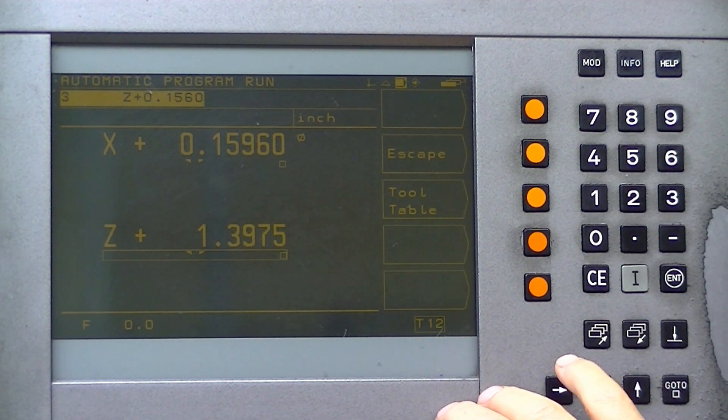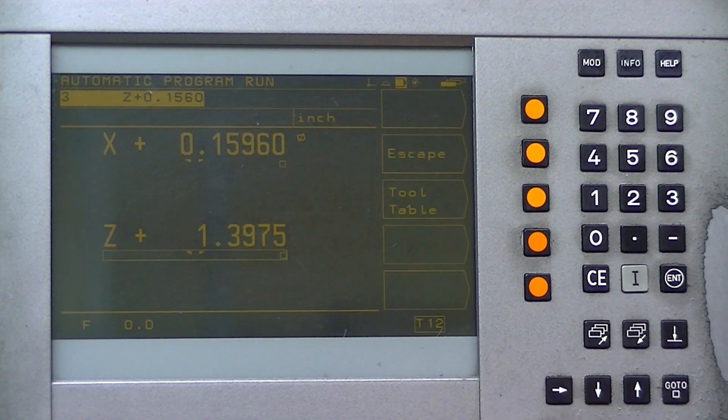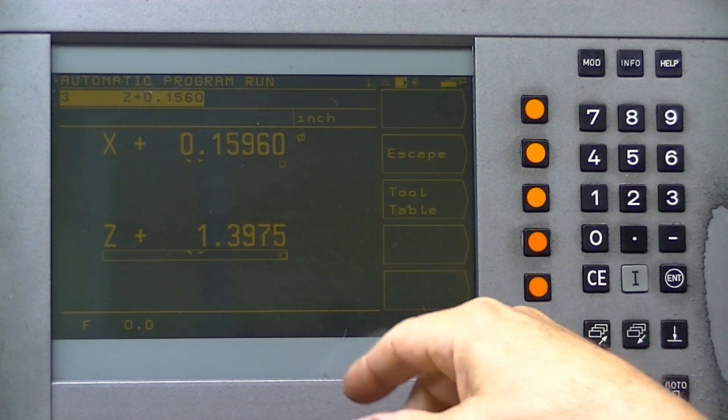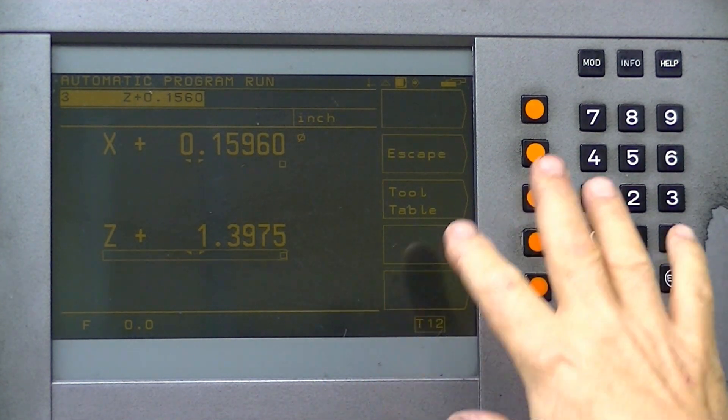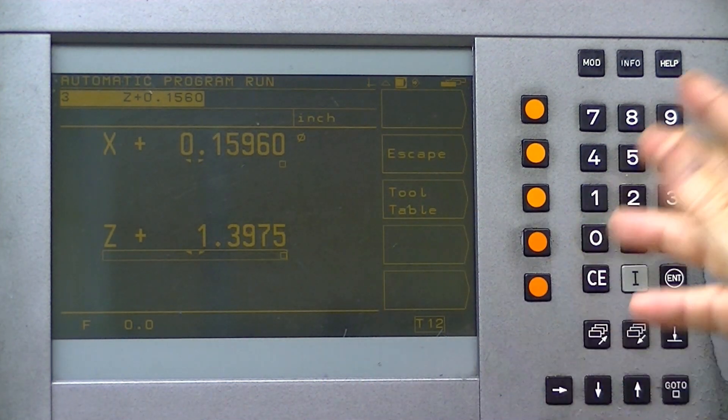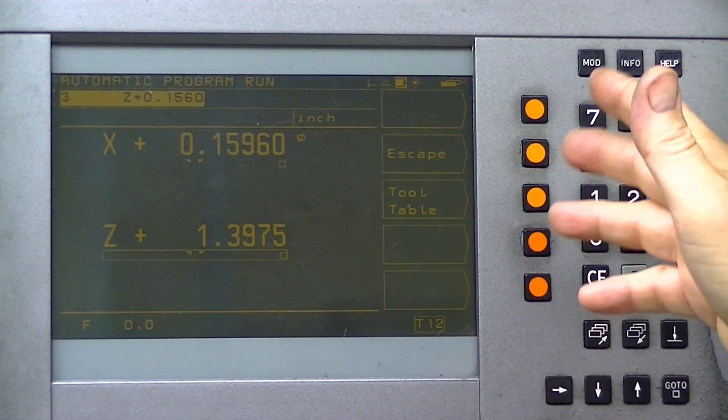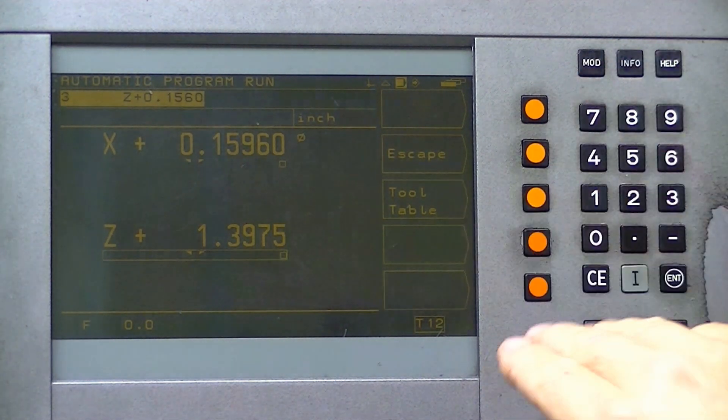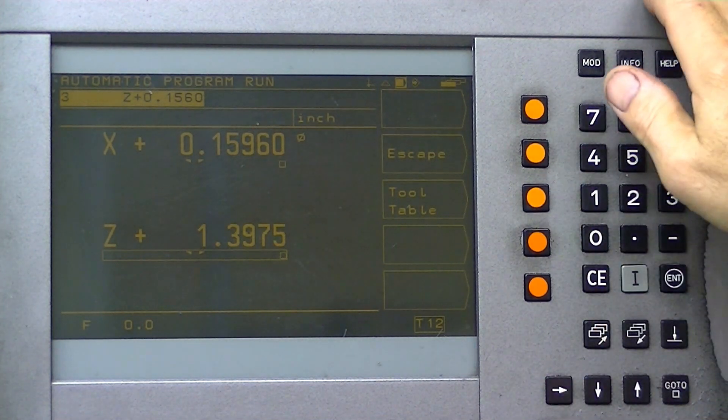So if I want, I can actually make this thing read 10 millionths per division on diameter in the lathe. Obviously I'm not going to do that, but I run it at 50 millionths on diameter, which means this thing's interpreting 25 millionths of an inch increments on the x-axis.